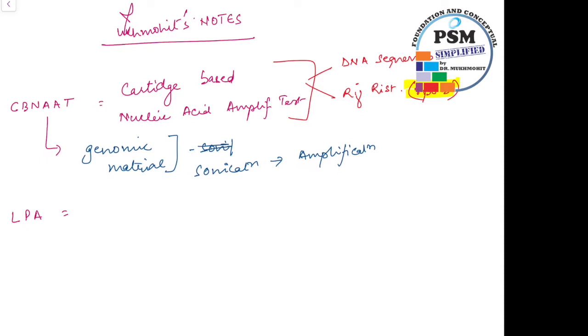This amplification of the genomic DNA is done using PCR, polymerase chain reaction, and therefore it is known as a nucleic acid amplification test or NAT test. The good thing about this is that it can do all this identification on the mycobacterium tuberculosis sample in a very fast time, that is in 90 minutes. This could be a frequently asked question in your exam, that CBNAT can test or diagnose tuberculosis within 90 minutes.